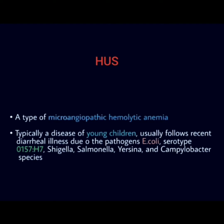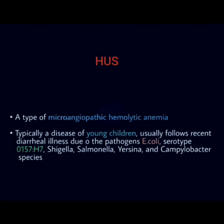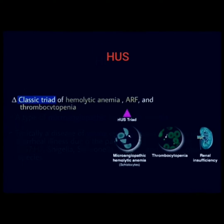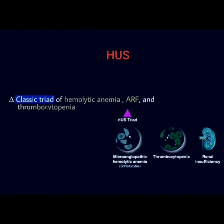Salmonella, Yersinia, and Campylobacter species are also responsible. The classical triad of Hemolytic Uremic Syndrome is: number one, microangiopathic hemolytic anemia; number two, acute renal failure or renal insufficiency; and number three, thrombocytopenia.